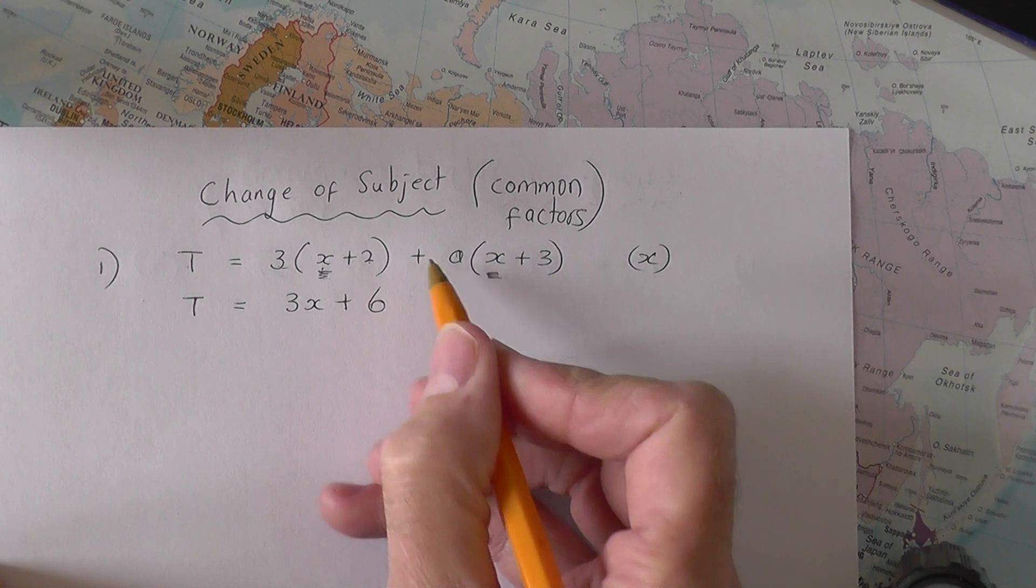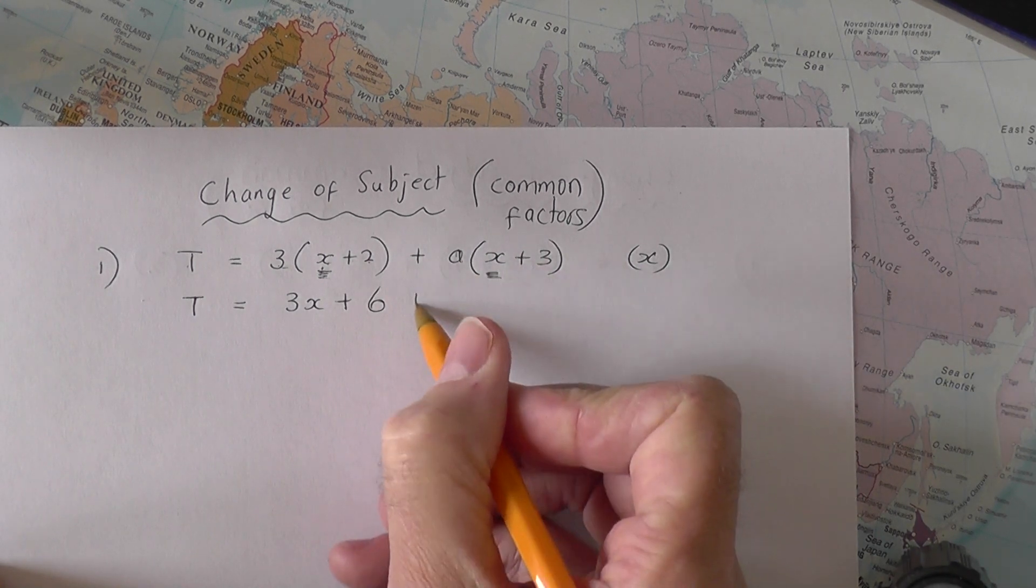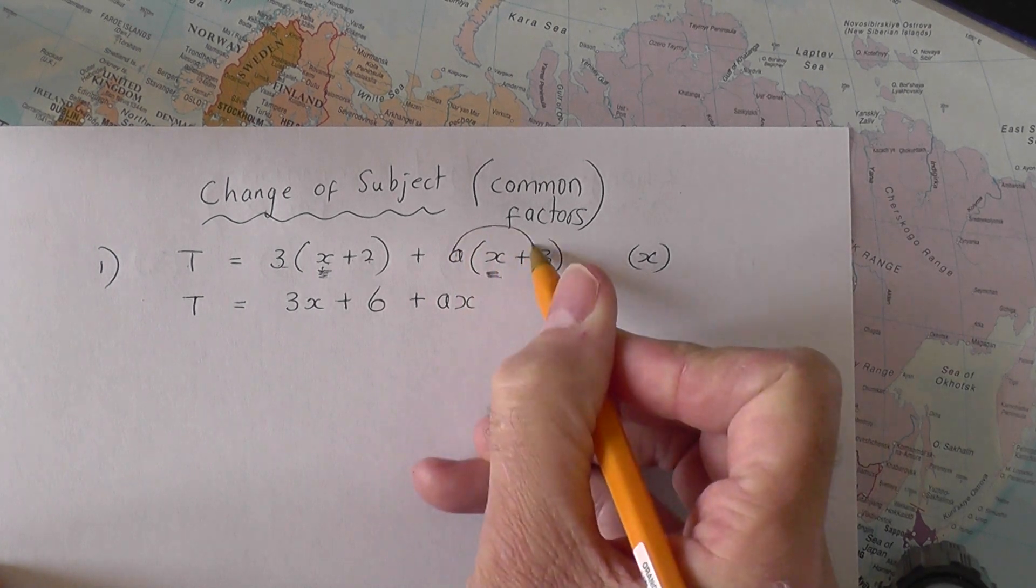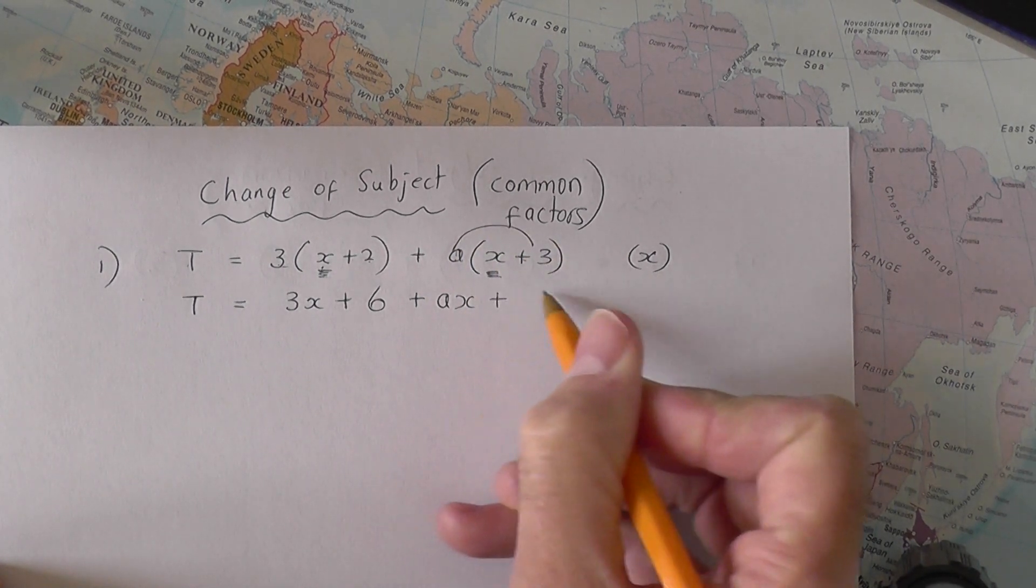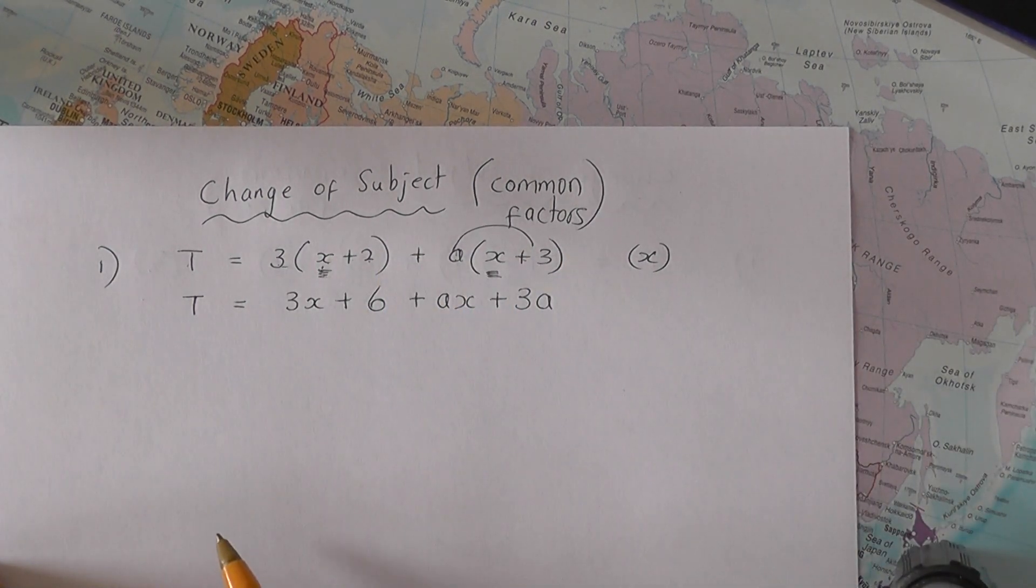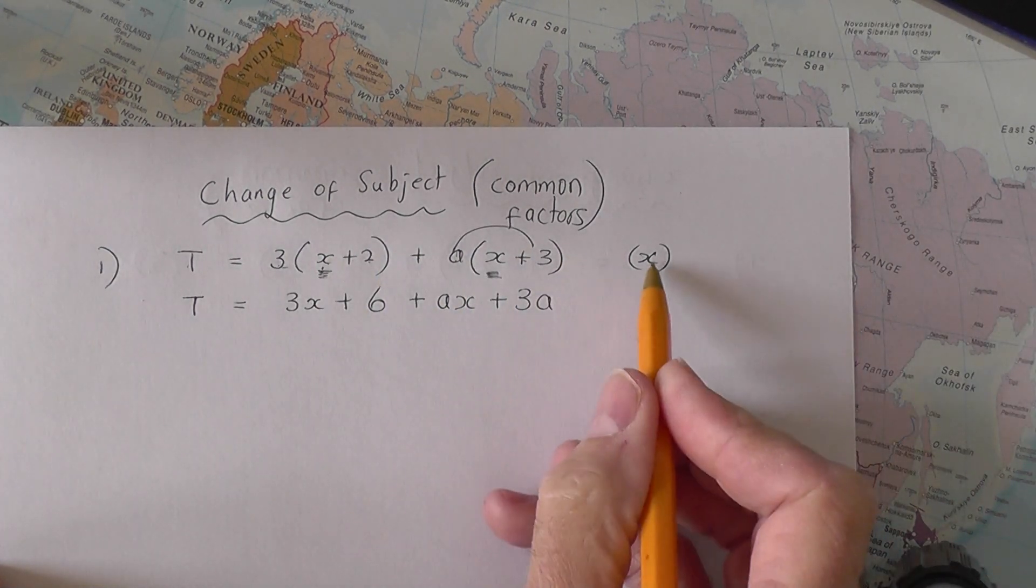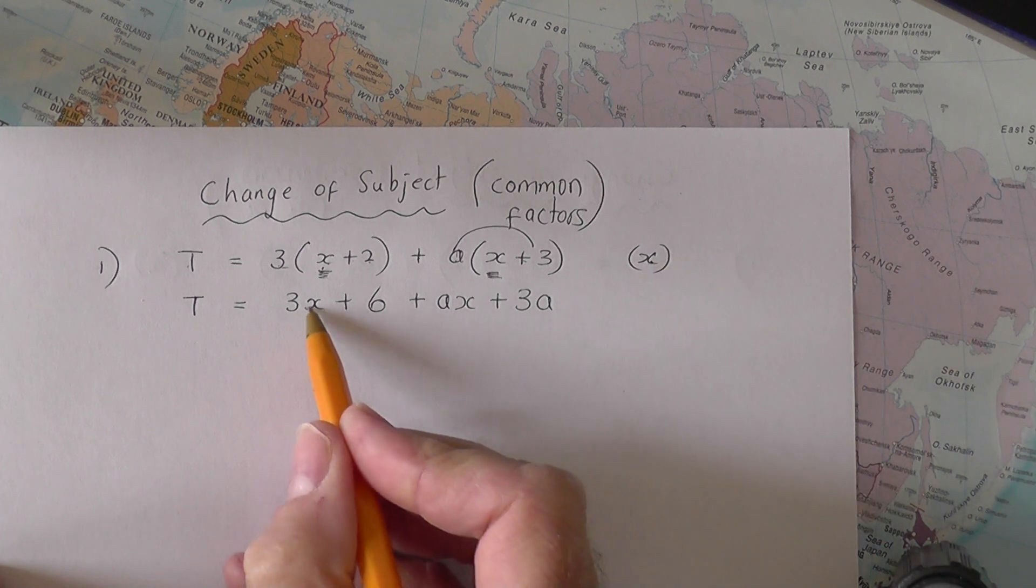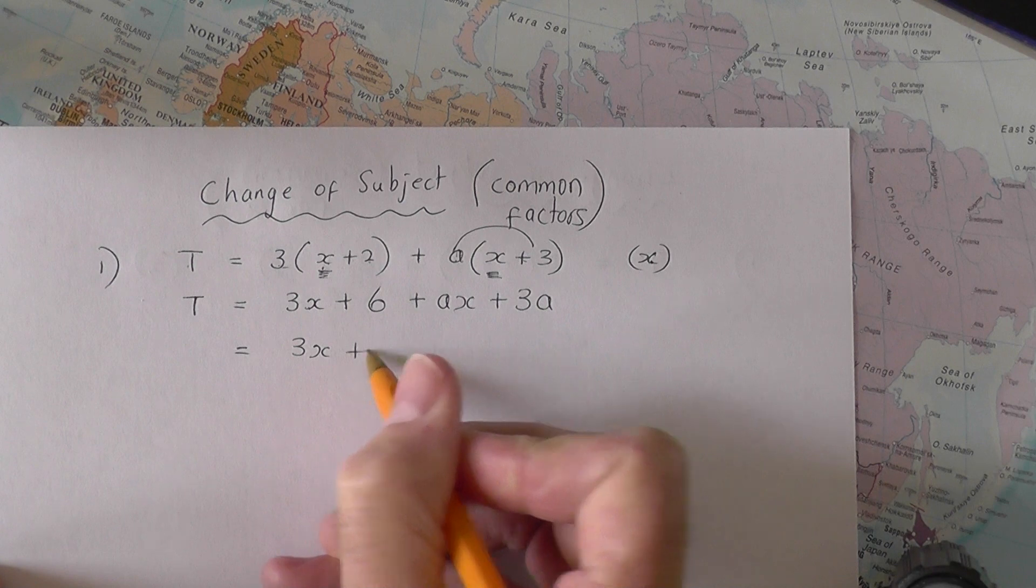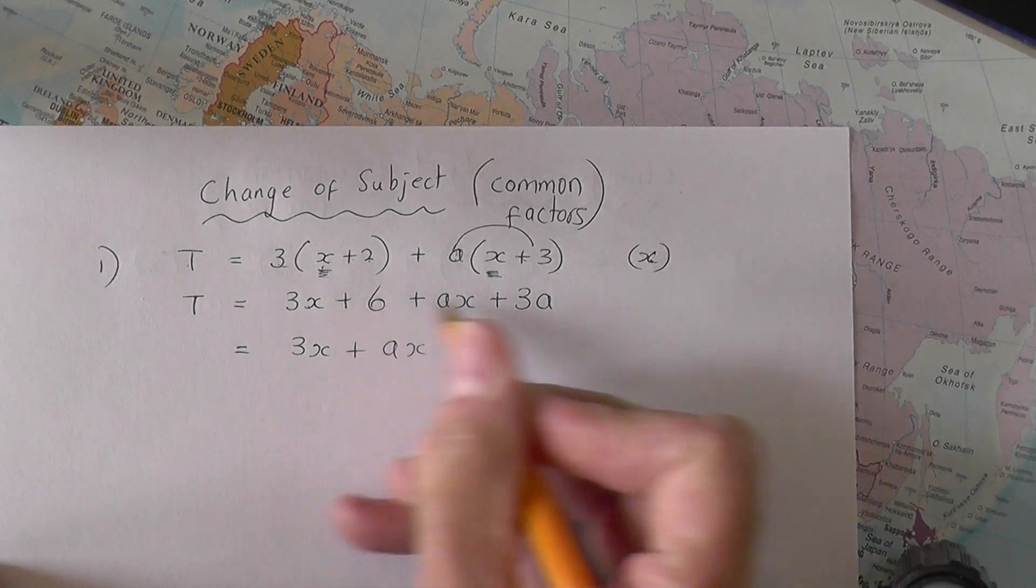Be careful with this next bracket. Plus A times X is plus AX. And then plus A multiplied by the plus three is plus three A. So that's the brackets expanded out. And now what we're going to do is collect, because we need X, we're going to collect the X's together on the right hand side. Three X plus AX. They stay where they are.